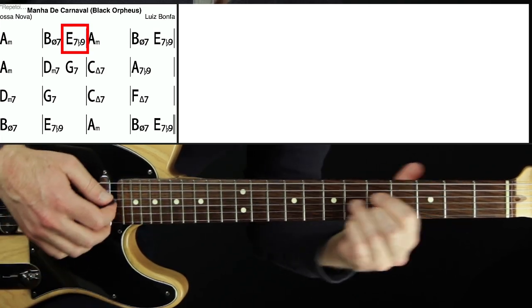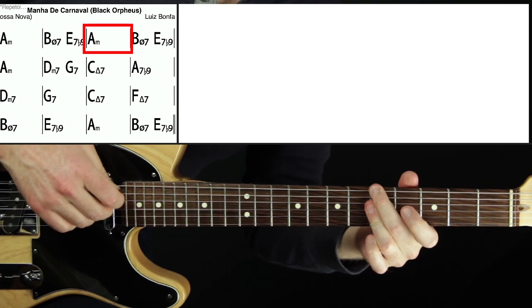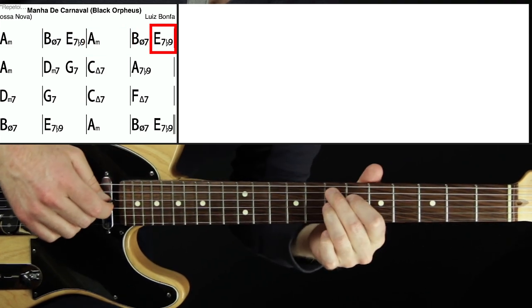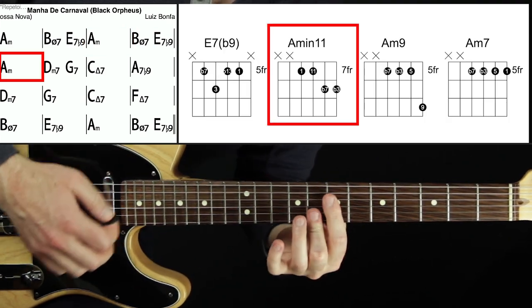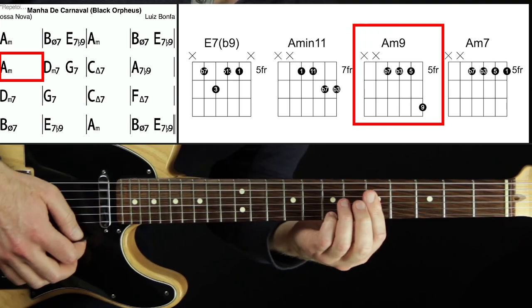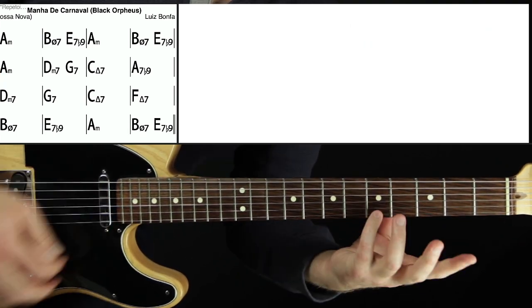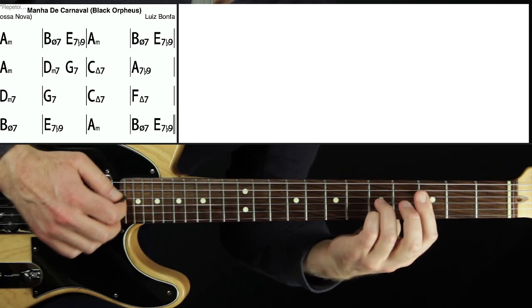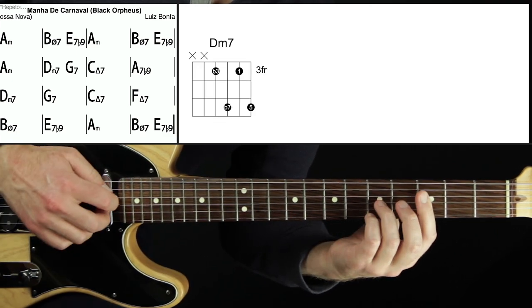So we have okay now measure four back to the A minor. This is the second line. Now we have D minor. Same melody though. This is just a standard inversion of D minor seven. This is first inversion D minor seven flat three flat seven root five.